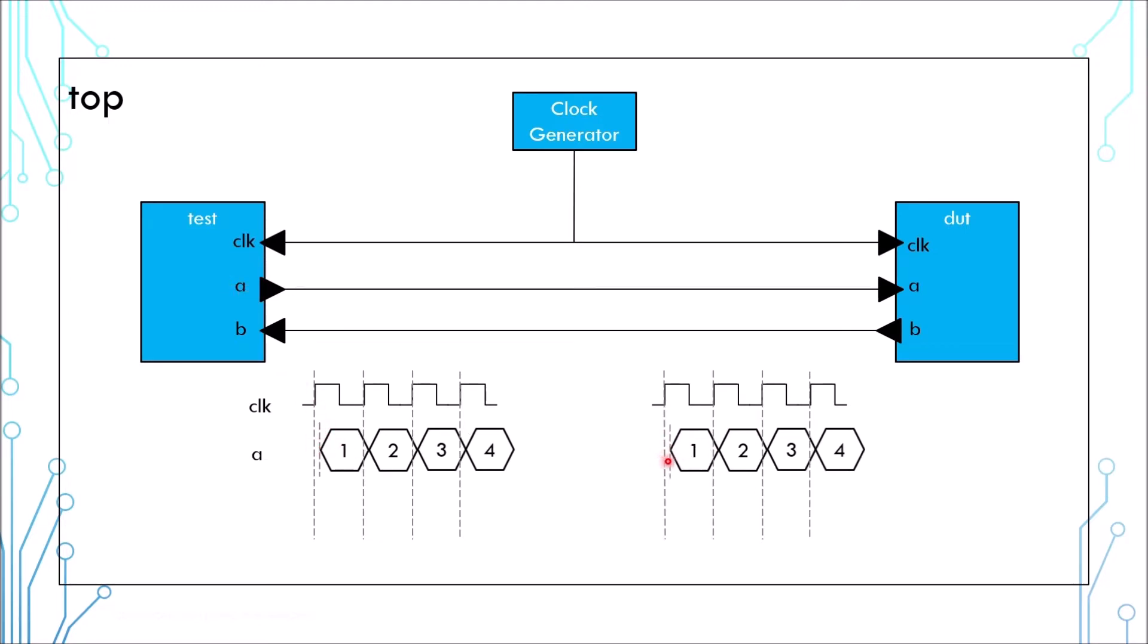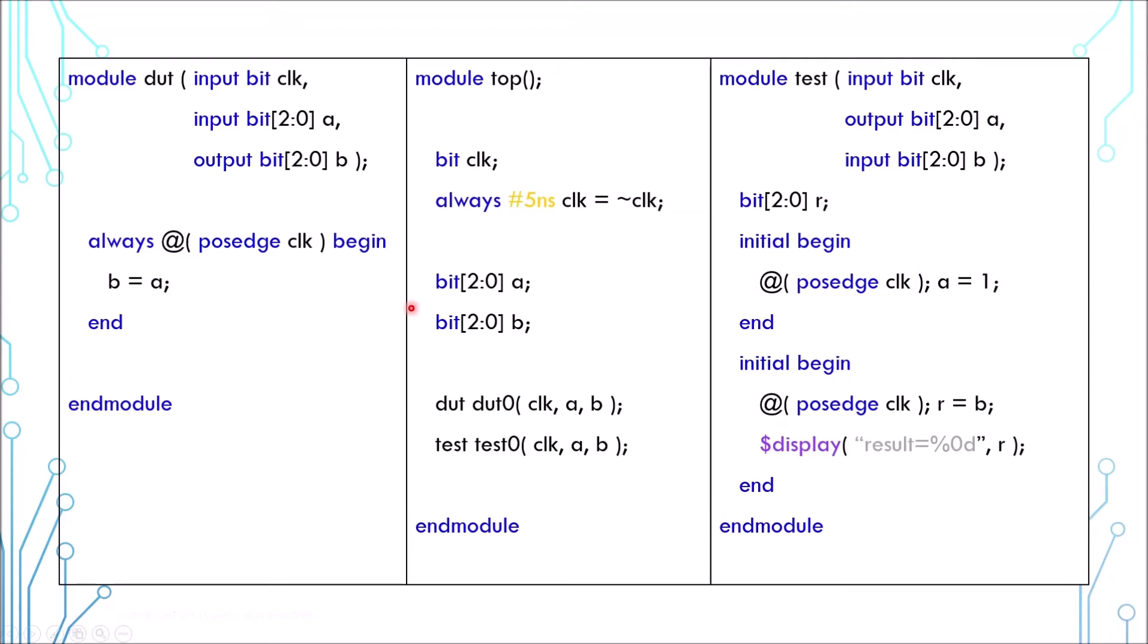And it takes time for the data to travel from test to design, so the design will see an even larger delay. Even though this is the clock when the data is sent, the design will only see it in the next clock. In this clock, the design outputs the data back to the test, and the same thing happens again but in an opposite direction.